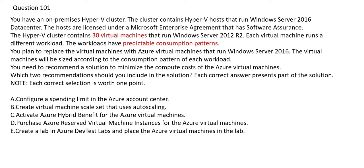All 30 virtual machines will be moved to Azure as Azure Virtual Machines, running the same Windows OS. When you see Windows both on-premises and in Azure, that means using Hybrid Benefit can save money — otherwise those on-premises licenses would go to waste. The question asks for a solution to minimize compute costs.